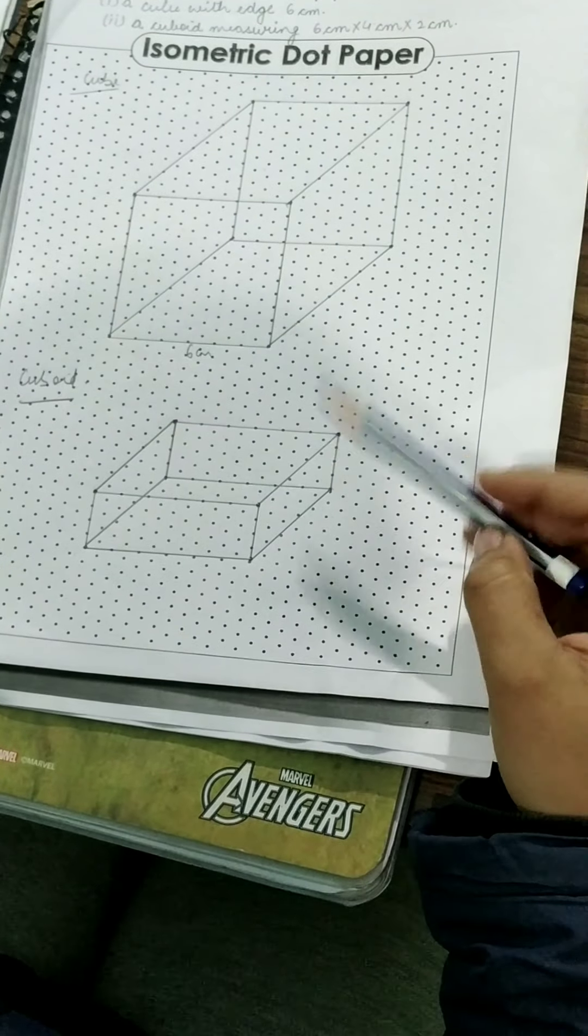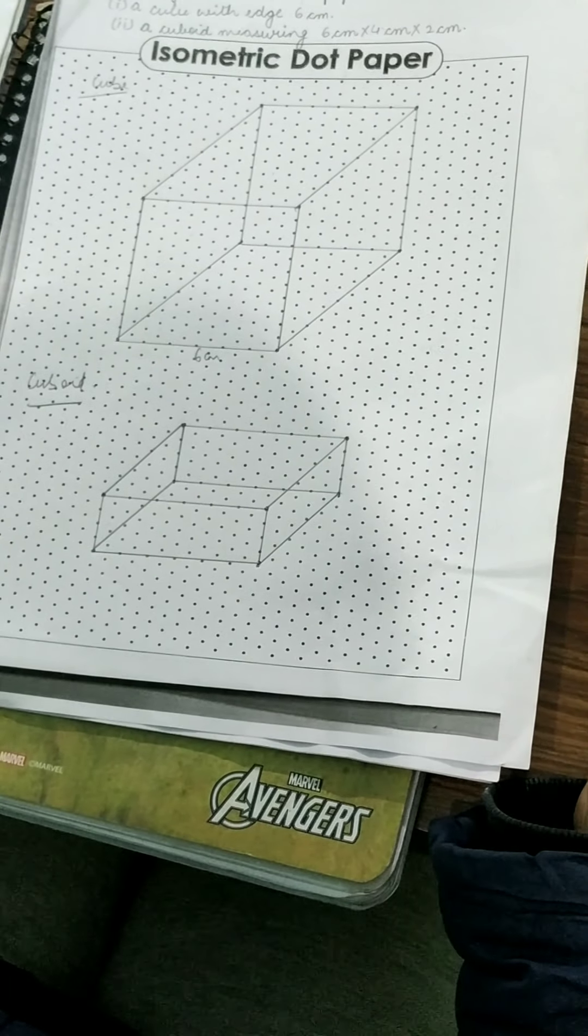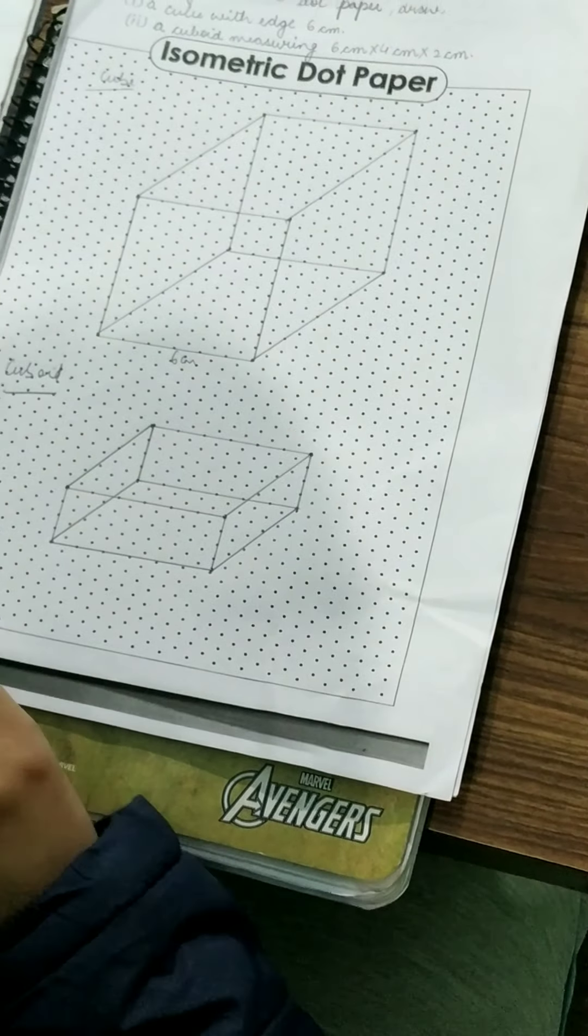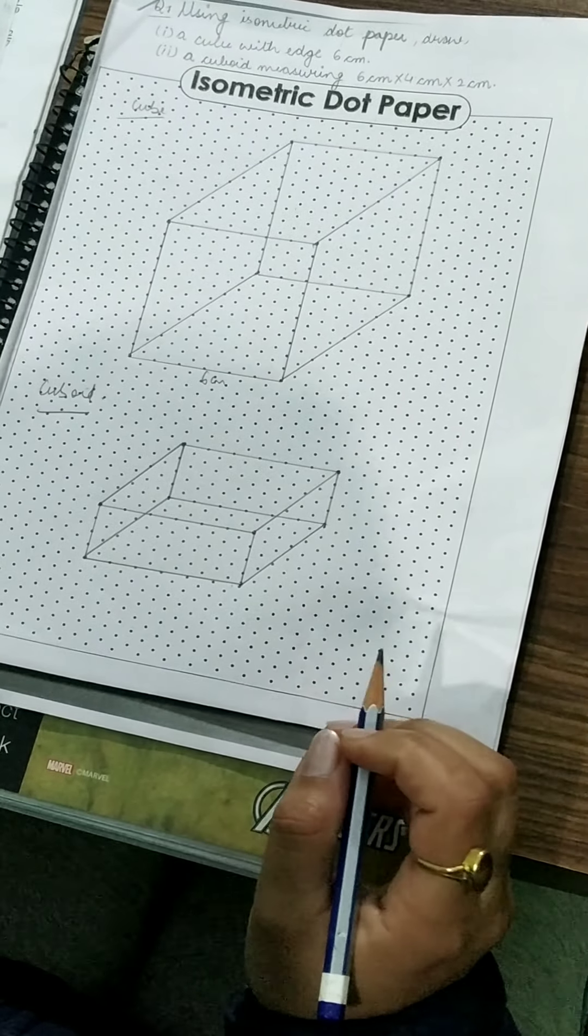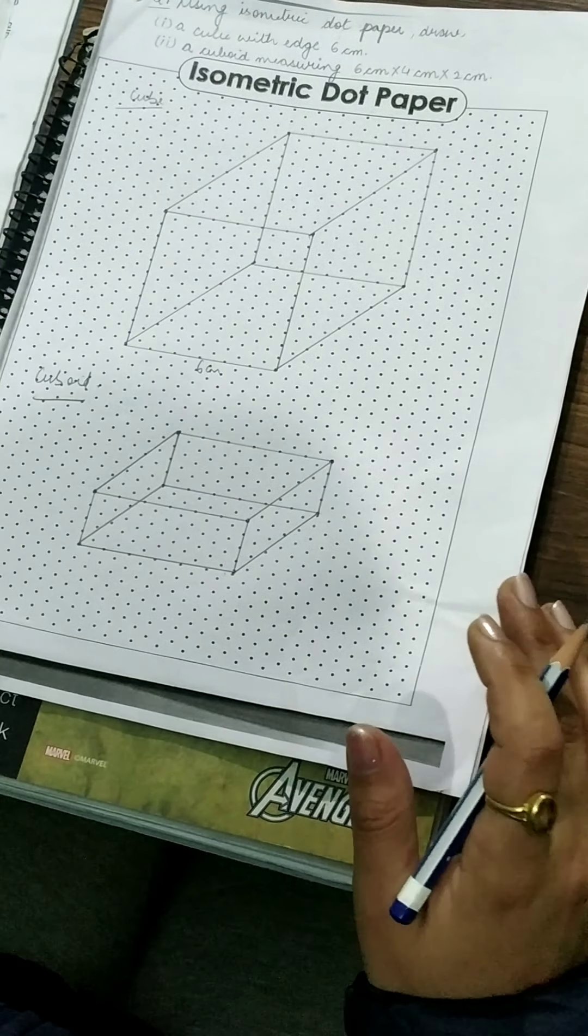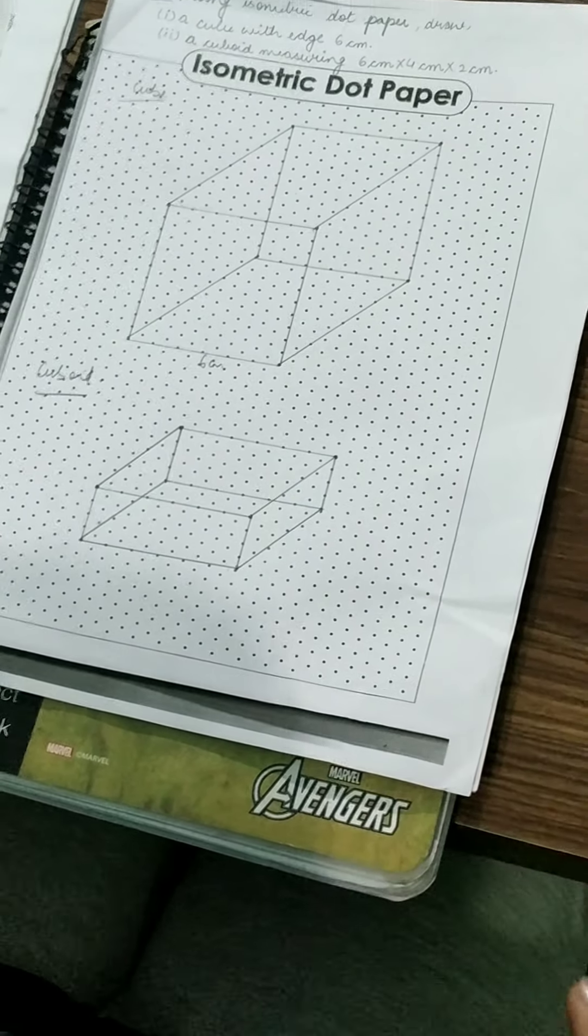So like this children you have to draw a cuboid and cube of different dimensions. And children, integrated exercise question number 6 is similar to this only. So that is your homework. Thank you children, do this in your isometric dot paper only.